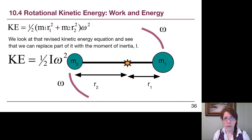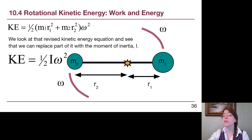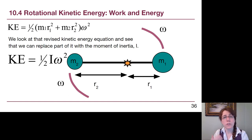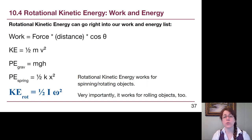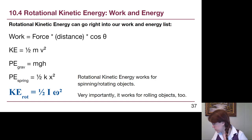When we rewrite that out, we get one-half out front and omega squared at the end, because both terms shared those factors. The stuff in the middle — in parentheses — is the moment of inertia of the system. So the kinetic energy of rotation, true for any rotating object shape, is equal to one-half I omega squared. That fits right into our standard work and energy framework.